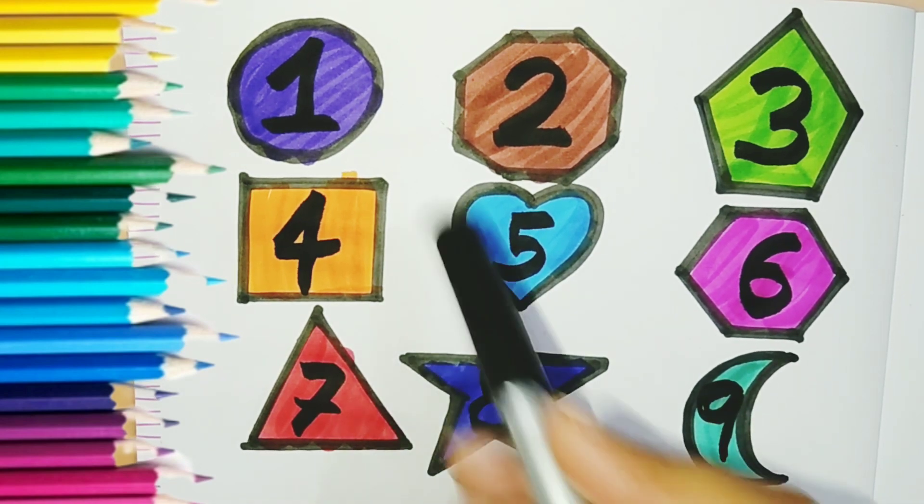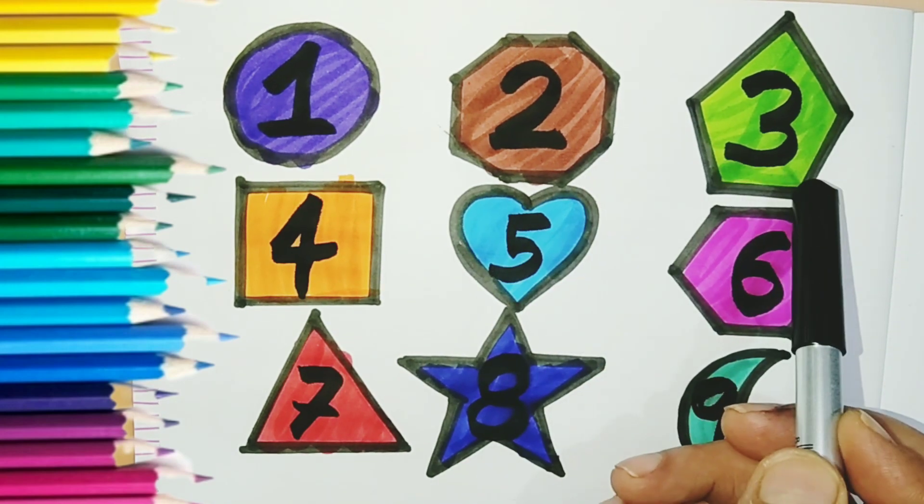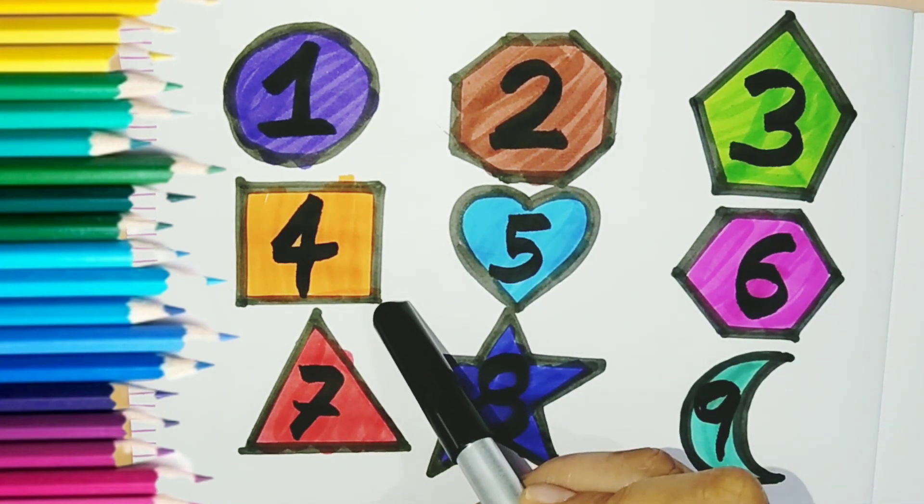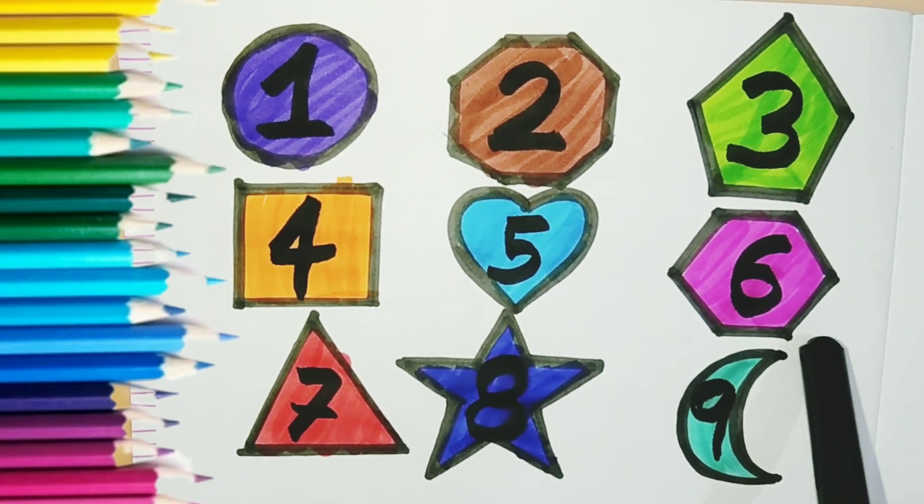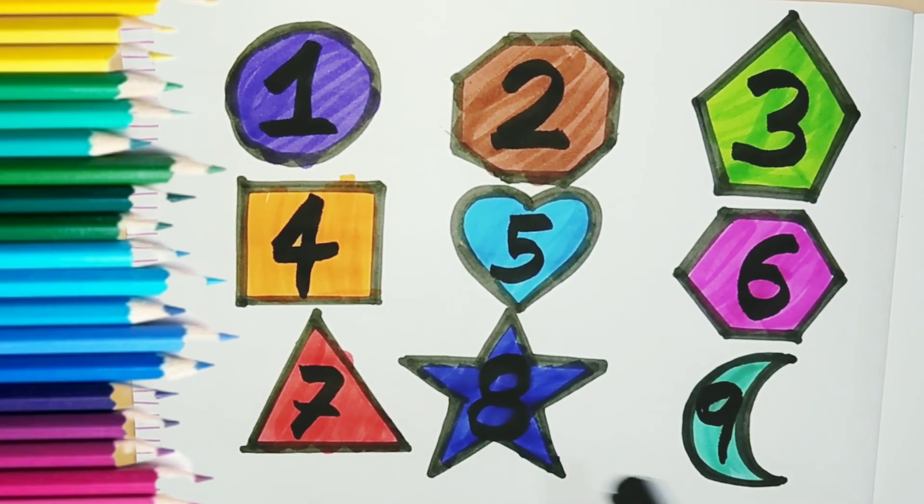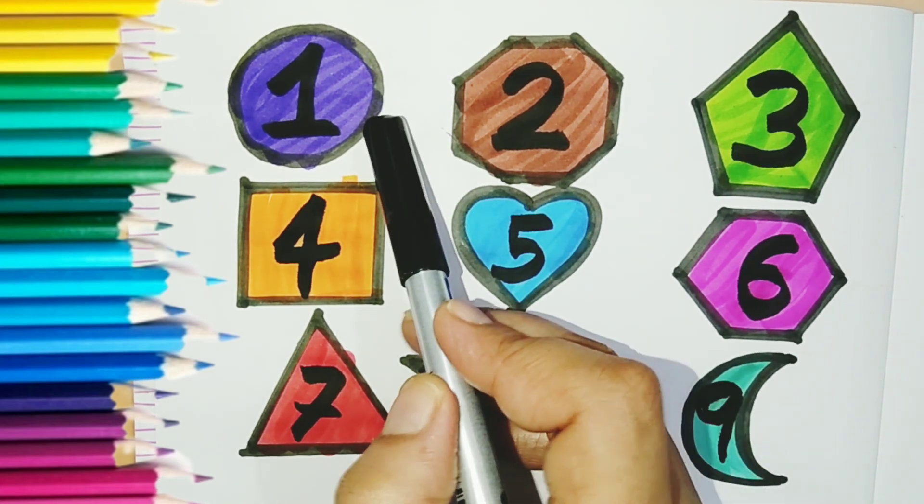Learn with me: circle, octagon, pentagon, square, heart, hexagon, triangle, star, moon. Indigo, brown.